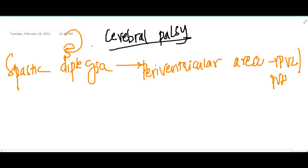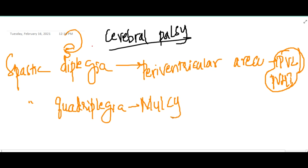Spastic diplegia involves the periventricular area and causes periventricular leukomalacia and periventricular hemorrhagic infarct. Then there is spastic quadriplegia. Spastic quadriplegia will cause multi-cystic encephalopathy.